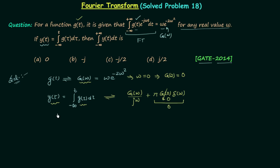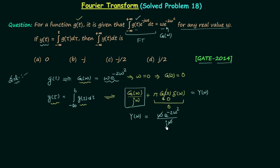Let the Fourier transform of y(t) be Y(ω). So Y(ω) equals G(ω) divided by jω. Since G(ω) equals ω·e^(-2ω²), we have Y(ω) equals ω·e^(-2ω²) divided by jω. The ω terms cancel, and multiplying numerator and denominator by j gives Y(ω) equals -j·e^(-2ω²).